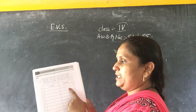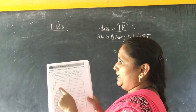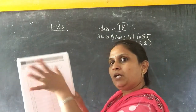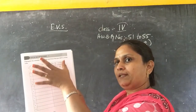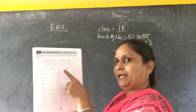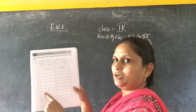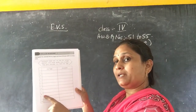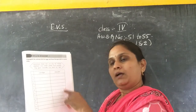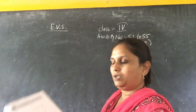Horse gives birth. Hen: laying eggs. Cat: gives birth. Like that, you segregate the animals which reproduce by laying eggs — write those in the first column. And the animals which reproduce by giving birth — write those in the second column.